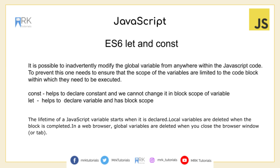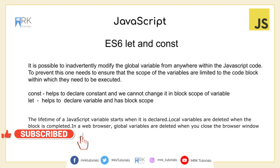I hope you understood what is a variable, what is scope, and what are the drawbacks of using var and why let and const were introduced in ES6. I hope the analogies in between were also helpful for better understanding. In the next video, we will be learning the differences between const, let, and var with a small clear table. Thanks for watching this video — please do subscribe and share with your friends. Thank you.